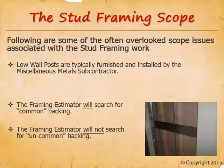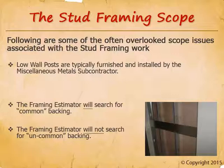My recommendation is for the estimator reviewing the project to flag everything that will require backing and put it on the scope sheet for framing bidders. It's okay to list common backing, but what you don't want to do is overlook uncommon backing. If you neglect to mention that interior expansion joints require backing, your framing subcontractor might submit a change order. Keep a backing log as you review the drawings and include it in the framer's scope of work.